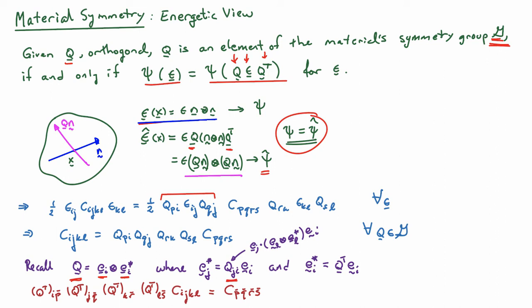What I'm going to do is go ahead and move these Qs to the other side of the expression by multiplying through by Q transpose. If I multiply through by Q transpose IP bar, Q transpose JQ bar, Q transpose KR bar, Q transpose LS bar, on the right hand side, I'll have a Q transpose IP bar, which will generate a Kronecker delta PP bar, and that will take this first P here and turn it into a P bar.